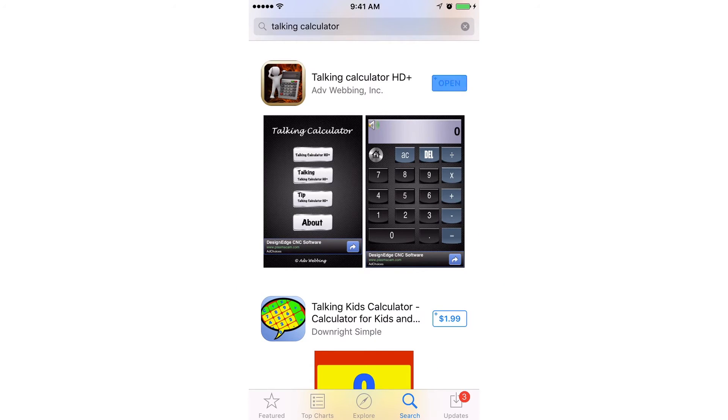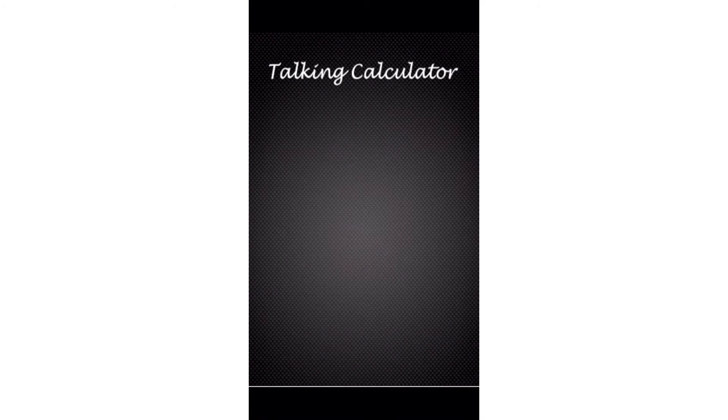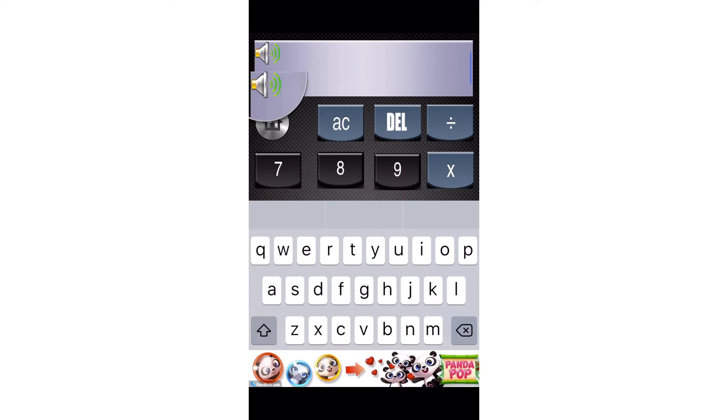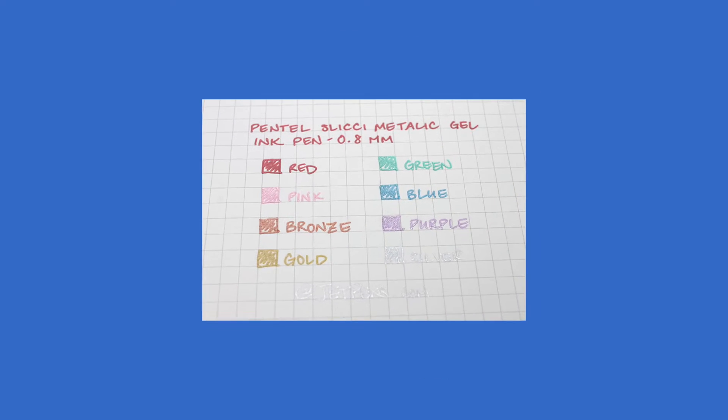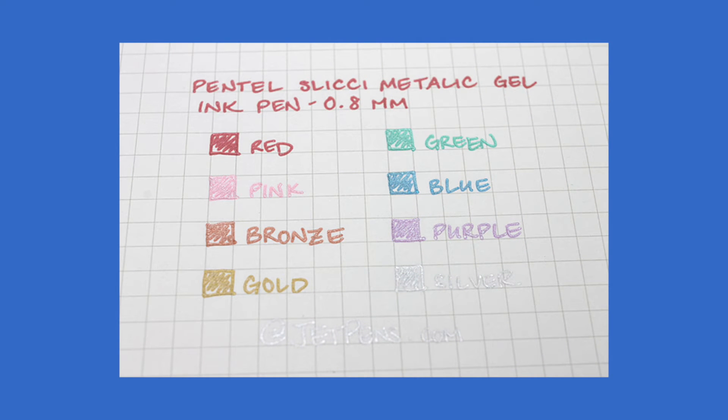You can also download talking calculators in app form onto smart devices. Graph paper can also be used in assisting with setting up math equations. Using the lines on the paper can make it so numbers do not jump around.